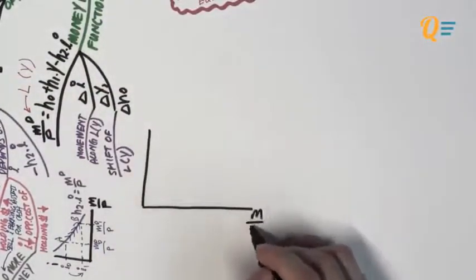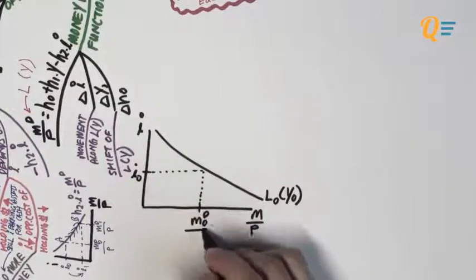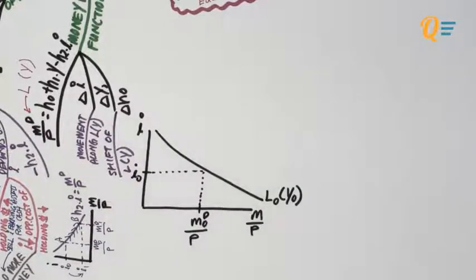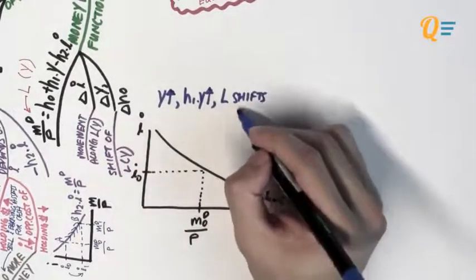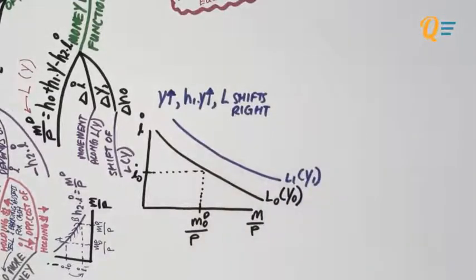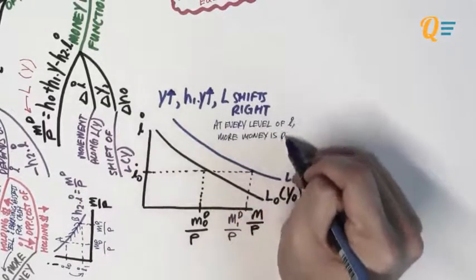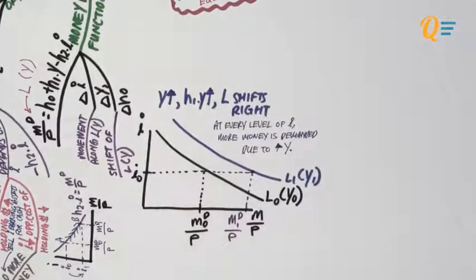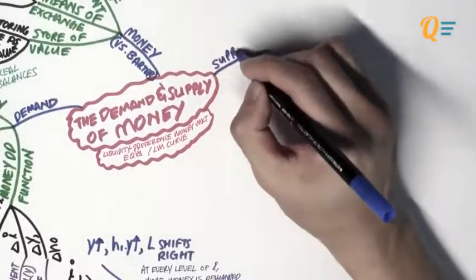On the graph, nominal interest is on the vertical axis and real money M/P is on the horizontal axis. Let's say initially interest rates are at i0, giving a corresponding demand for real money of M0/P. When income rises, H1Y increases — this is the transactional motive — so the entire L curve shifts to the right. Assuming interest rates haven't changed, this gives a new money demand of M1/P. The intuition is that at every level of interest rates, more money is demanded due to the increase in income. We'll see this graph again in the next video when deriving the LM curve.